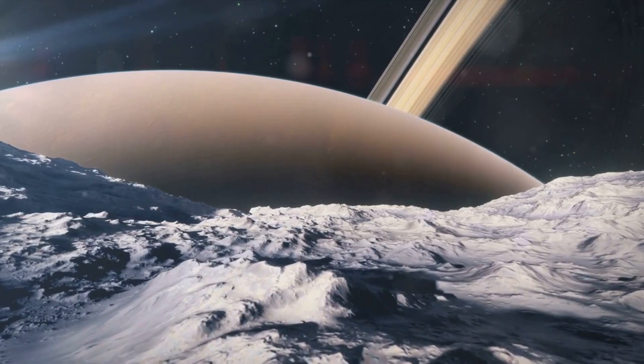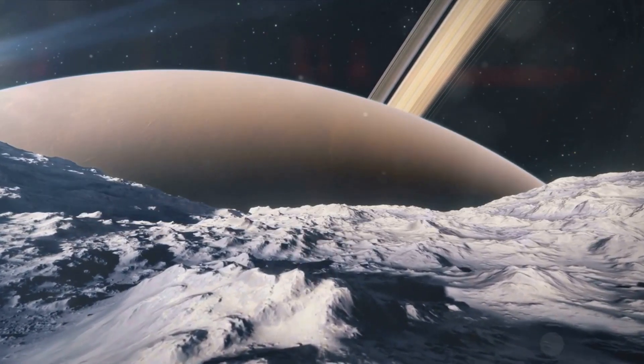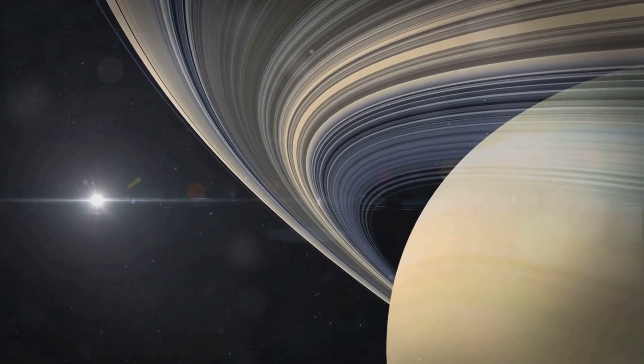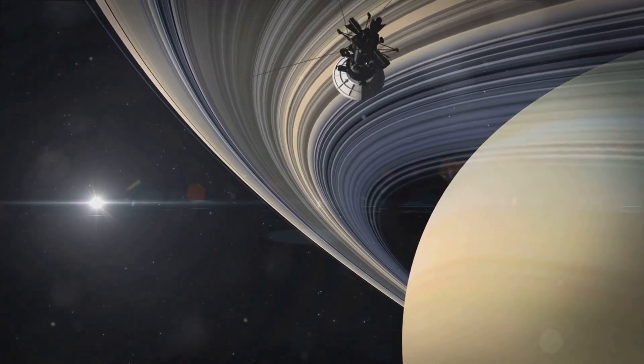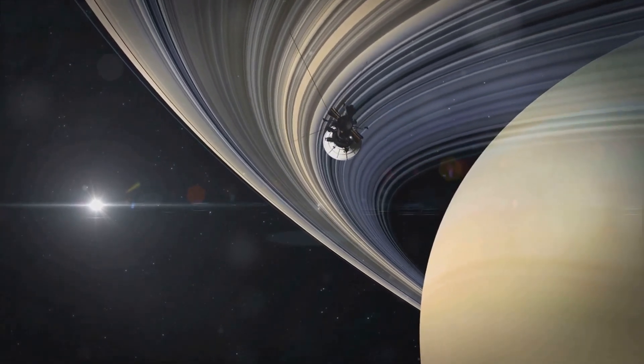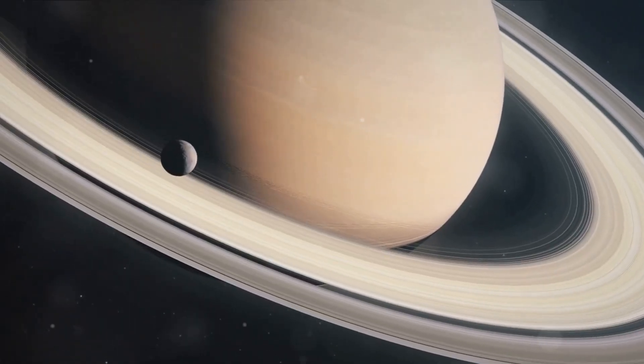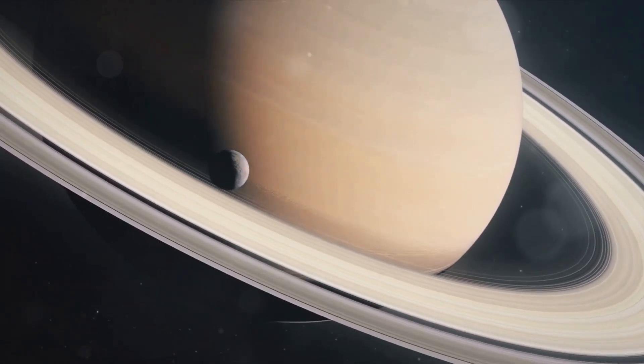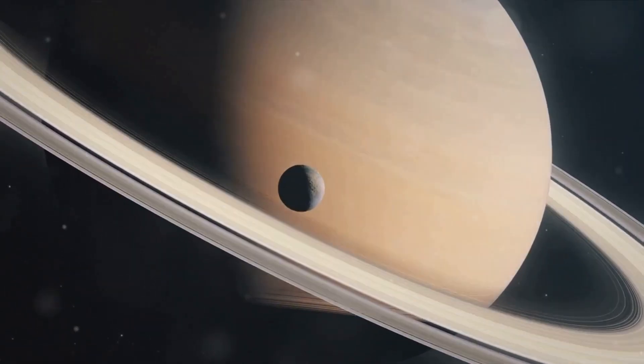This geometrical marvel sits atop Saturn's north pole, swirling away in a dance of cloud and wind. Theories about its formation range from atmospheric pressure differences to wave patterns in the planet's flowing atmospheric jet streams. But the truth? It remains elusive.